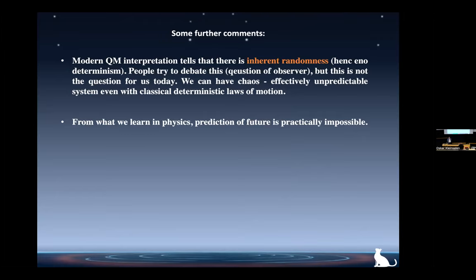Two comments before continuing. First, about quantum mechanics: everything I discussed was classical — classical equations of motion. In quantum mechanics there is inherent randomness, and people debate this because randomness comes at the moment of measurement. But for statistical physics we do not require quantum effects — we can be completely classical and deterministic and still have chaos. Quantum effects can be present or not; the result is the same.